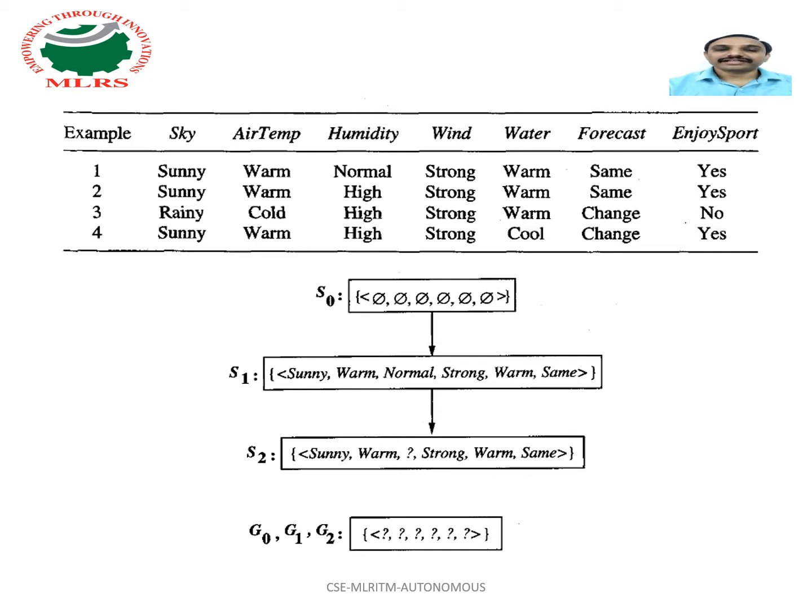G0 contains all question marks, so for any type of situation the condition is true. S0 contains all phi values, which is the most specific hypothesis.